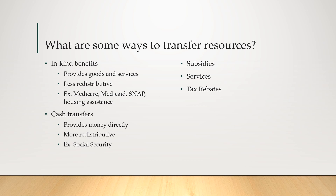Cash transfers are what you'd expect — providing money directly to the person who is struggling. Social Security, for example, gives money monthly to eligible individuals. Cash transfers tend to be more redistributive because the money goes directly to the person who is struggling and they decide how to allocate their funds. There are also subsidies, services, and tax rebates as transfer mechanisms, but the two main categories are in-kind benefits and cash transfers.